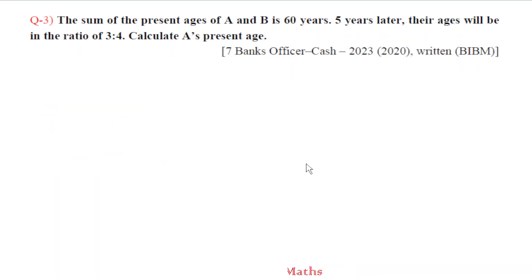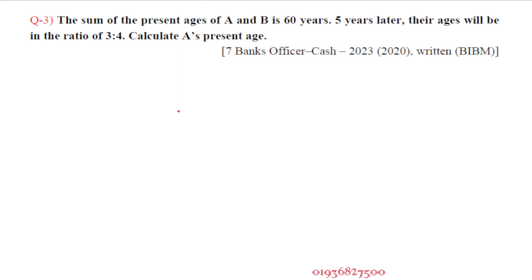Question number 3: The sum of the present ages of A and B is 60 years. Five years later, their ages will be in the ratio of 3 is to 4. Calculate the present age of A.